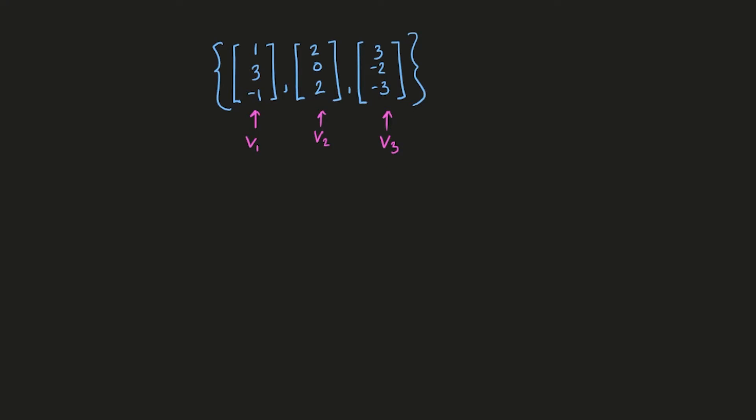So for example, if you have a question here that says normalize this set, where v1 is 1, 3, negative 1, v2 is 2, 0, 2, and v3 is 3, negative 2, negative 3.